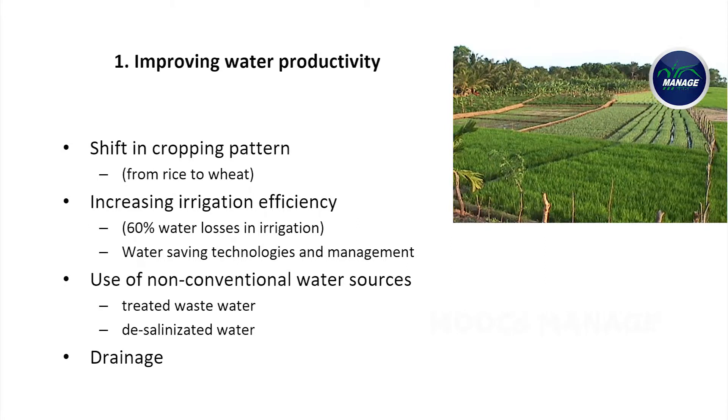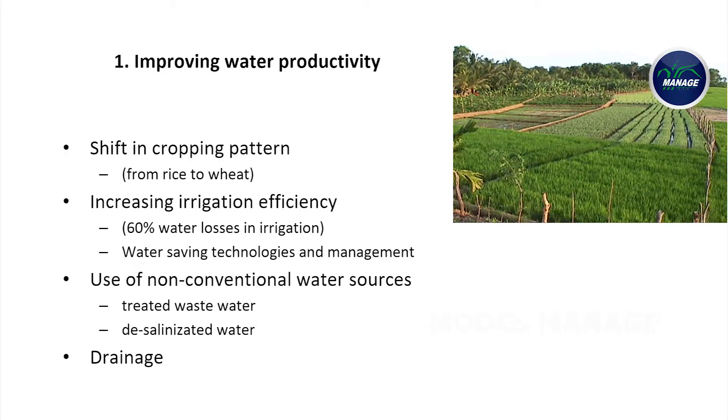We will now discuss some of the best water management strategies in detail. The first important strategy is improving water productivity. Higher water productivity in agriculture can be achieved mostly by shifting from mono cropping or rice-wheat based cropping systems to multiple or diversified crops where there is less demand on water application. Besides crop diversification, we must also emphasize water-saving technologies, use of non-conventional sources like desalinated water and treated sewage water, and adequate emphasis on the drainage system for agricultural land.